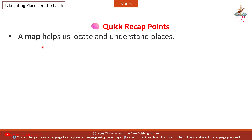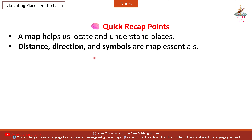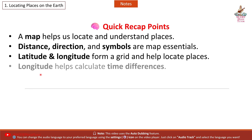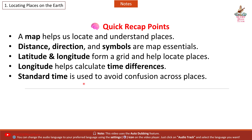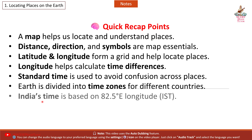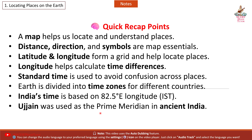Quick Recap: A map helps us locate and understand places. Distance, direction, and symbols are map essentials. Latitude and longitude form a grid and help locate places. Longitude helps calculate time differences. Standard time is used to avoid confusion. India's time is based on 82.5 degrees east longitude (IST). Ujjain was used as the prime meridian in ancient India.